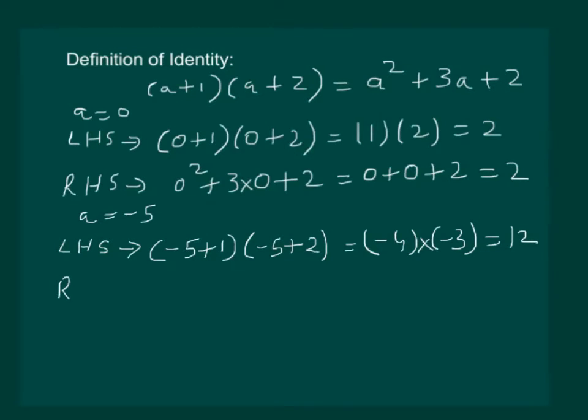Similarly, let us substitute a = -5 in the right hand side: (-5)² + 3×(-5) + 2 which comes out to be 12.